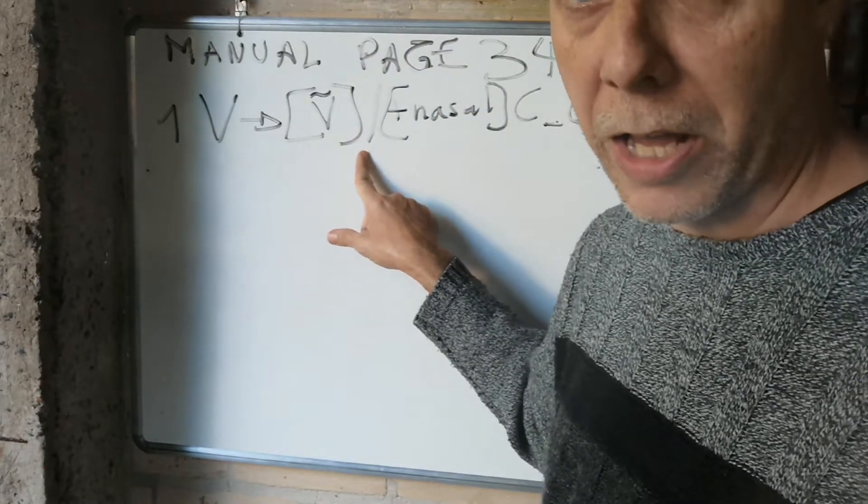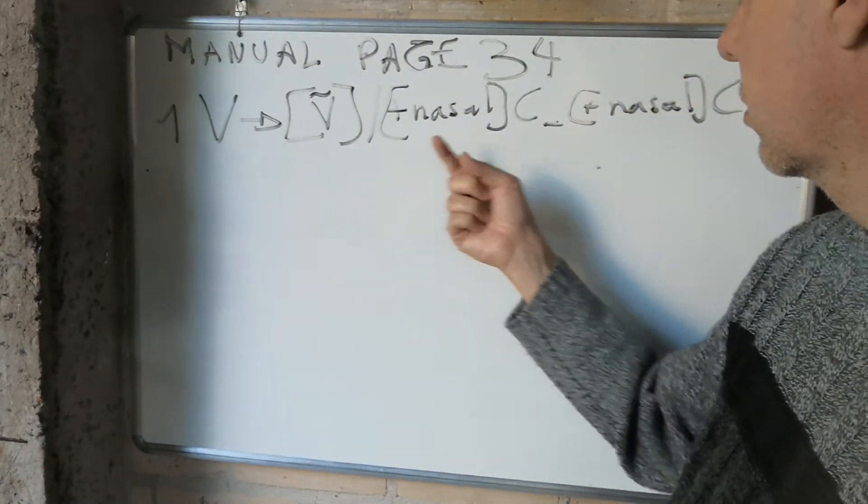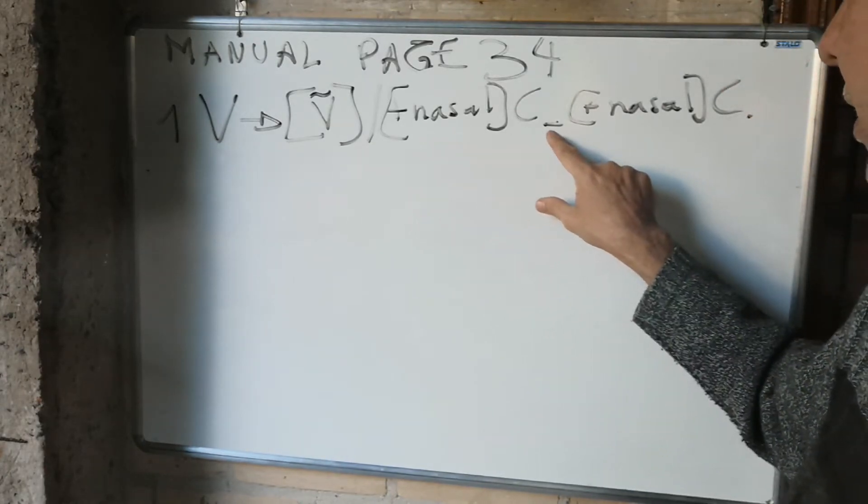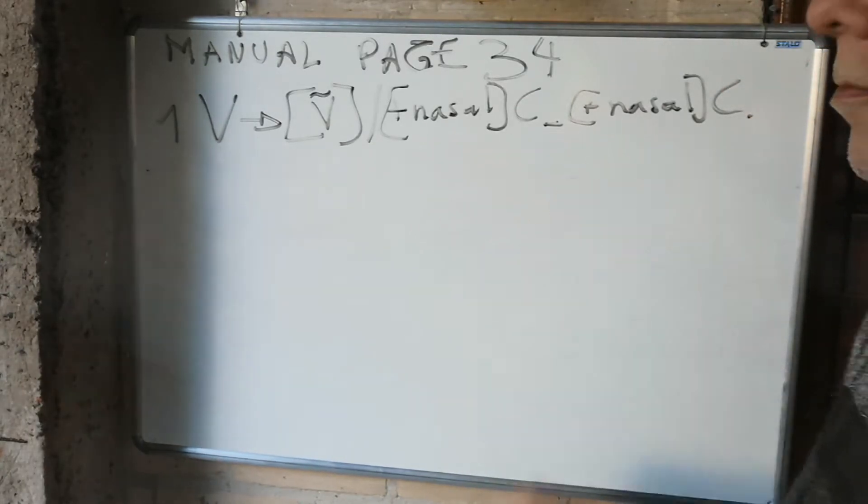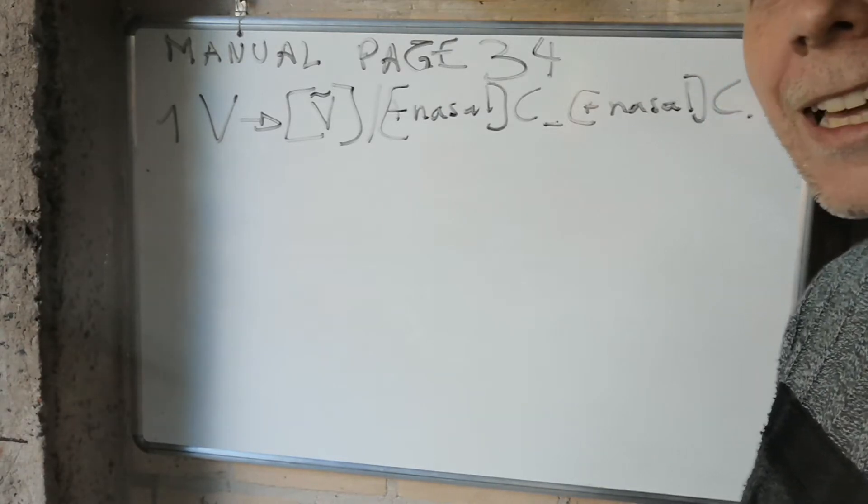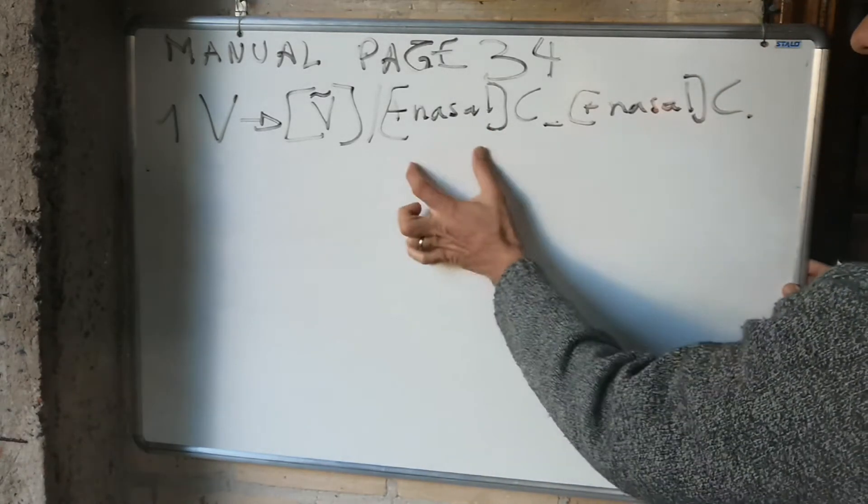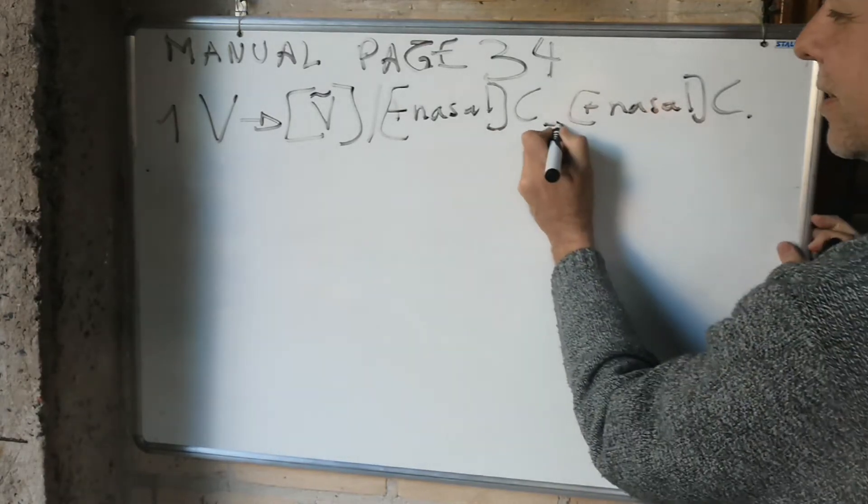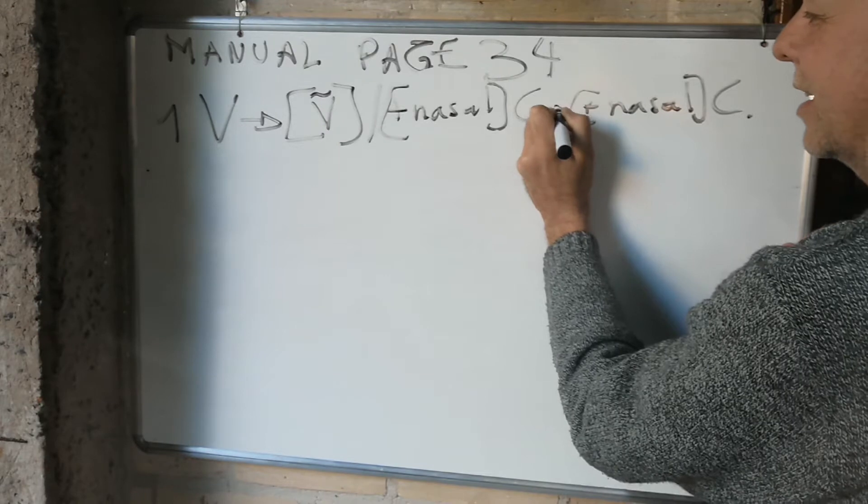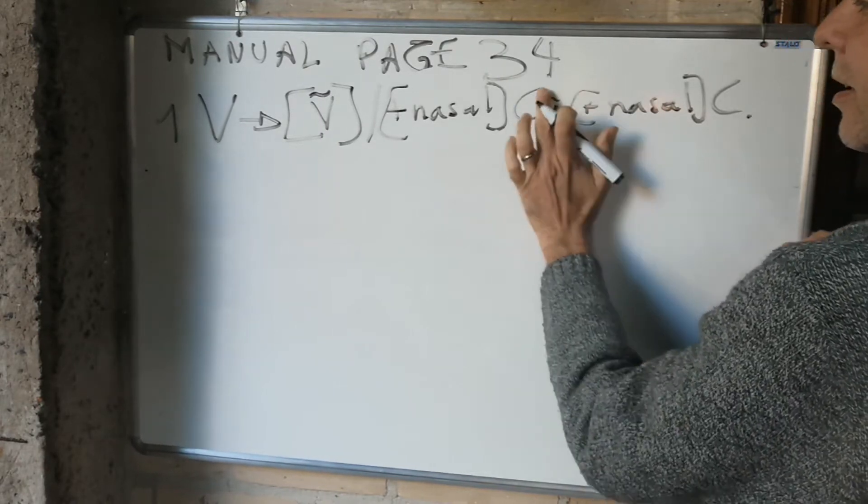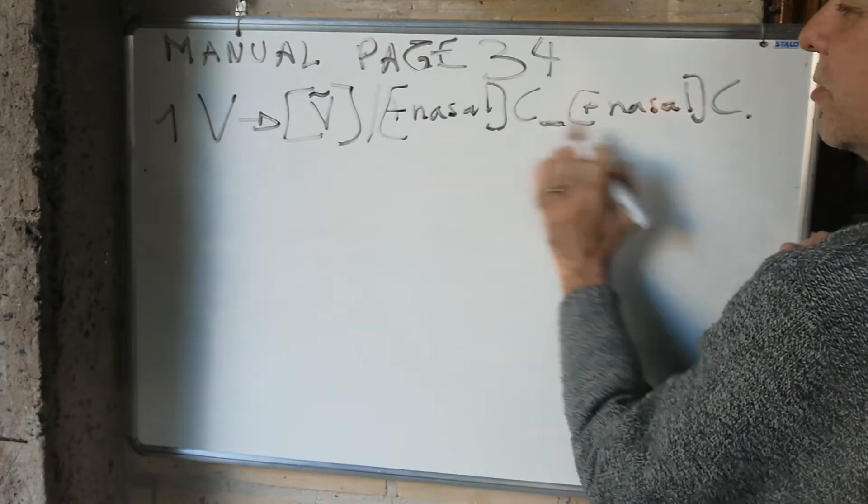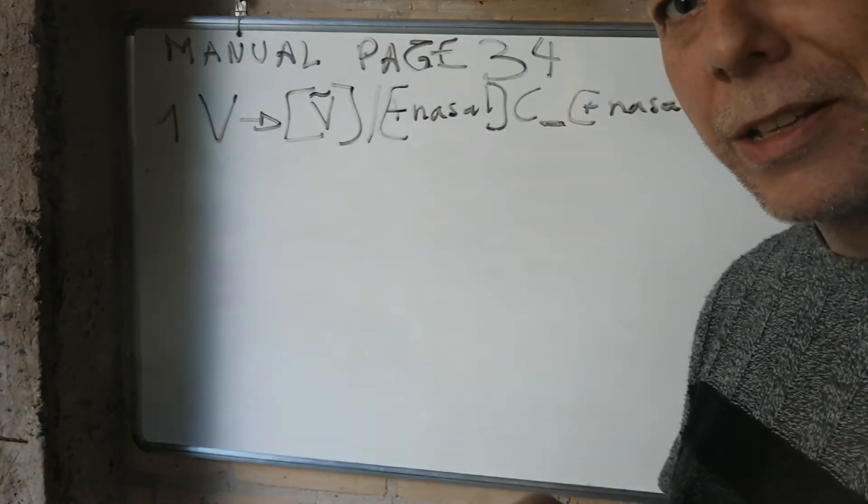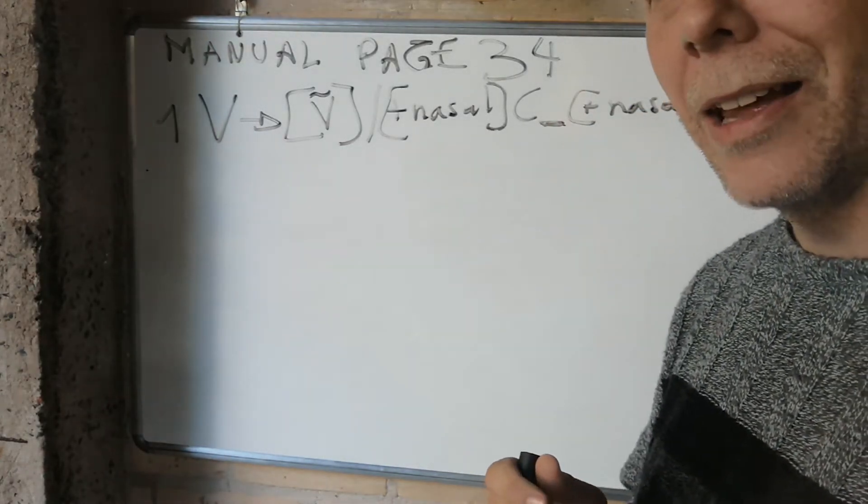In the phonological environment of... what does this mean? A nasal consonant, then underscore, nasal consonant. What do you think? Yes, you're right - between nasal consonants. The vowel is here, and it occurs between nasal consonants. What kind of rule is this? A nasalization rule.